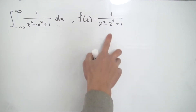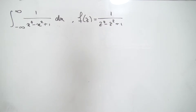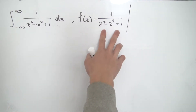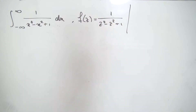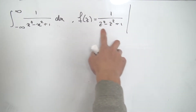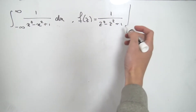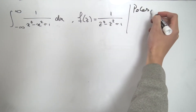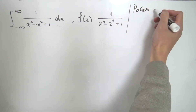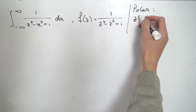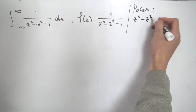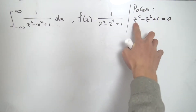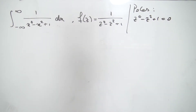To use Cauchy's residue theorem, we need to know where the poles of this function are. The poles are where the function blows up to infinity, which happens when the denominator equals zero. So our poles occur for all z where z to the four minus z squared plus one equals zero — those are the solutions to this quartic.